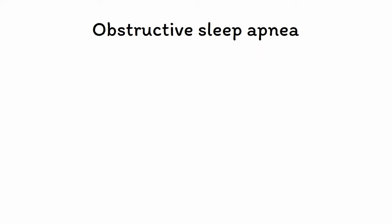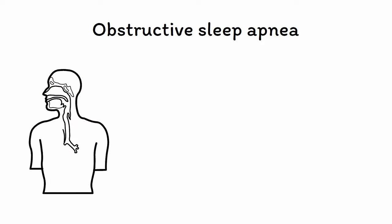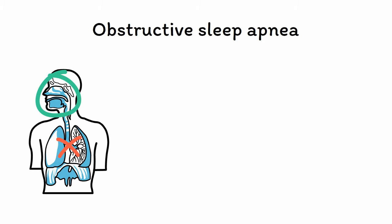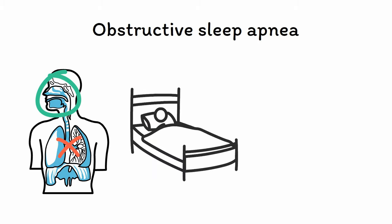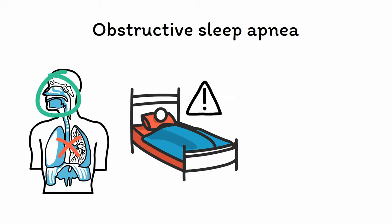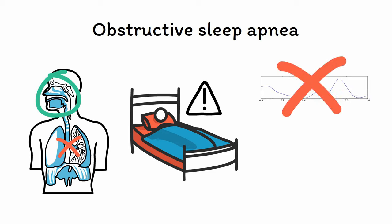First, obstructive sleep apnea, or OSA, is a condition in which people suffer from brief but recurrent episodes of apnea, or pauses in breathing, throughout the night. This occurs as a result of anatomical blockage of the airways due to both the muscle relaxation that occurs during sleep as well as the recumbent position that most people sleep in. These hypoxic episodes lead to transient micro-awakenings that occur throughout the night and prevent the person from entering into deep sleep, resulting in sleep that is not restorative.